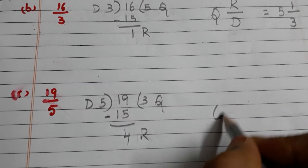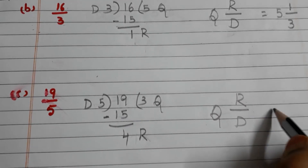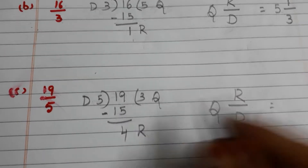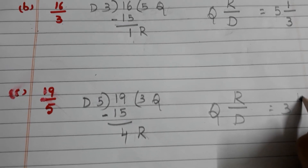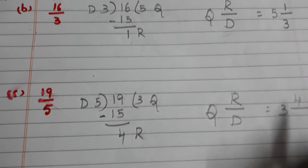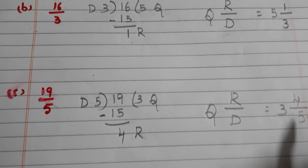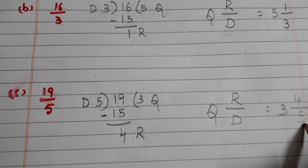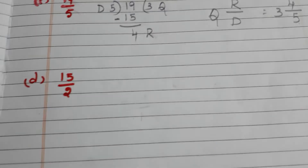How to write the mixed fraction? Q R/D. What is the quotient? 3. What is the remainder? 4. What is the divisor? 5. So 3 and 4/5 is the mixed fraction. Let us go to the last one.